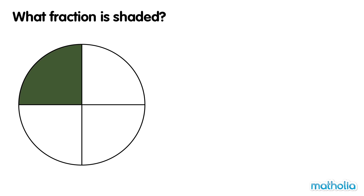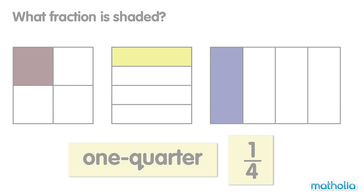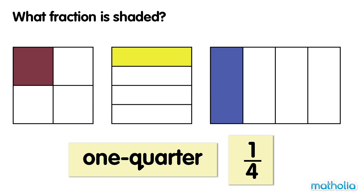The circle is divided into four equal parts. One part is shaded. One quarter of the circle is shaded. One quarter. One quarter of these shapes are shaded.